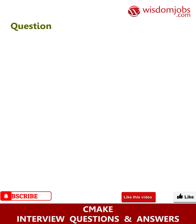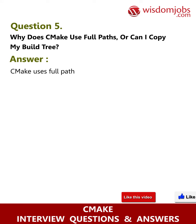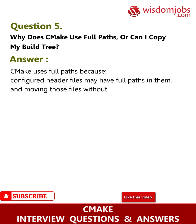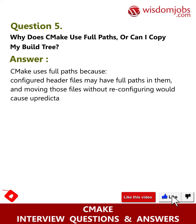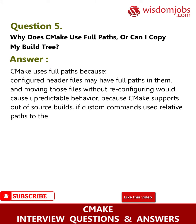Question 5: Why does CMake use full paths, or can I copy my build tree? Answer: CMake uses full paths because configured header files may have full paths in them, and moving those files without reconfiguring would cause unpredictable behavior. Because CMake supports out-of-source builds, if custom commands used relative paths to the source tree, they would not work when run in the build tree.